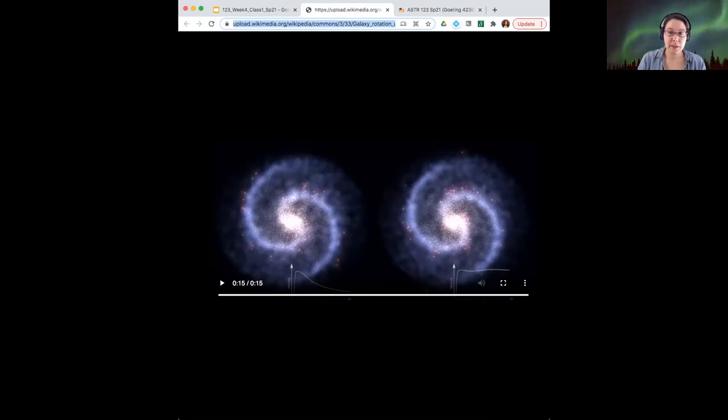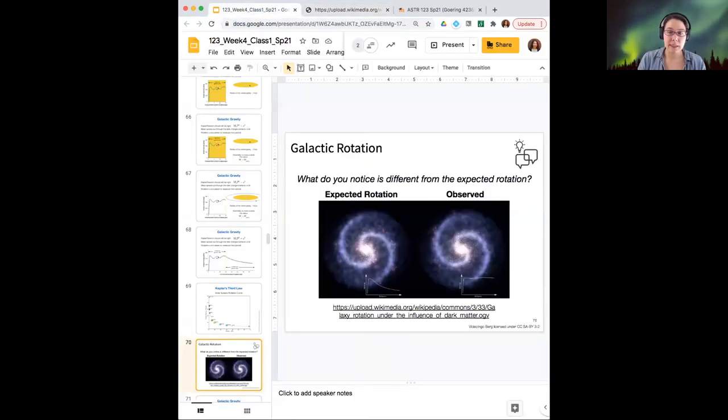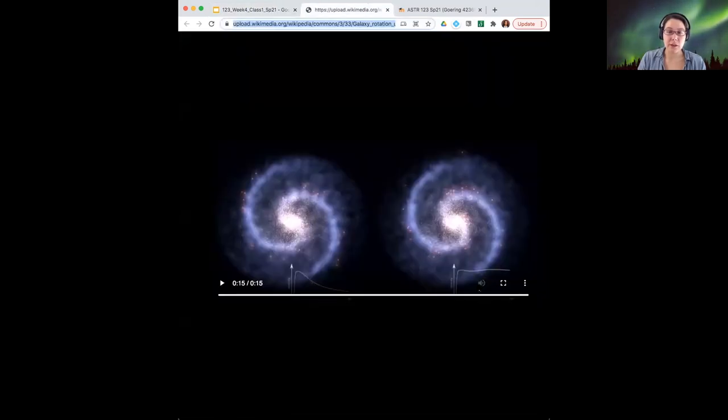So I'm going to play this a few times. And basically what I want you to notice is, is there anything different from the expected rotation? So the expected rotation is on the left, the observed rotation of the galaxy is on the right. So the question is, does the observed on the right have any differences from the expected at left? I'll just play this a few times on a loop, and give you time to type into the chat.